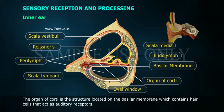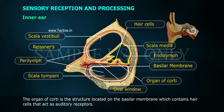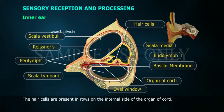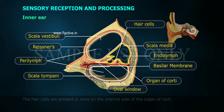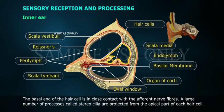The organ of Corti is a structure located on the basilar membrane, which contains hair cells that act as auditory receptors. The hair cells are present in rows on the internal side of the organ of Corti. The basal end of the hair cell is in close contact with the afferent nerve fibres.